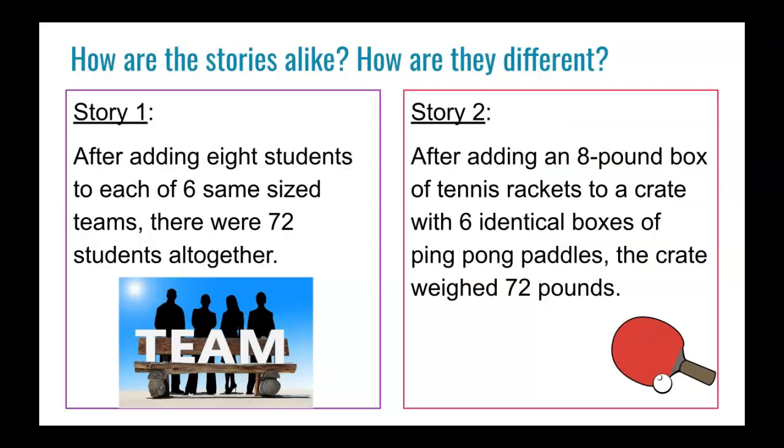So let's get some examples. Here's two stories. I want you to look at them and determine how are they alike and how are they different. Story 1 says after adding 8 students to each of 6 same size teams, there were 72 students altogether. And story 2 says after adding an 8 pound box of tennis rackets to a crate with 6 identical boxes of ping pong paddles, the crate weighed 72 pounds.